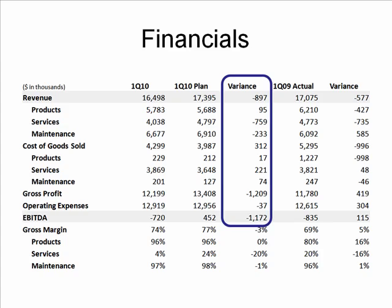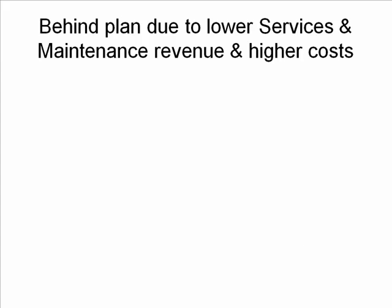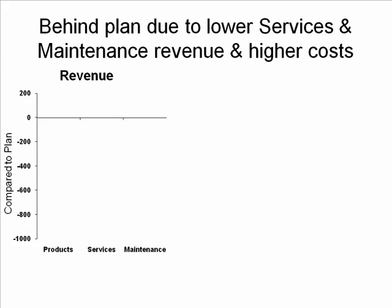Let me show you the slide I put together. Our concern here is that we're a fair bit behind plan. There are two reasons for that. First, our revenue is lower, especially in the services and maintenance area. And on the cost side — despite lower revenue you'd expect lower costs, but actually higher costs are showing up. On the revenue side, comparing how we're doing against plan, our product revenue is actually above plan, which is great — you've done a great job on product sales.